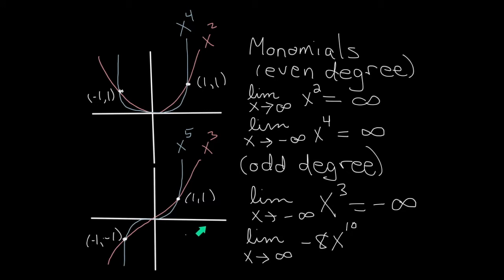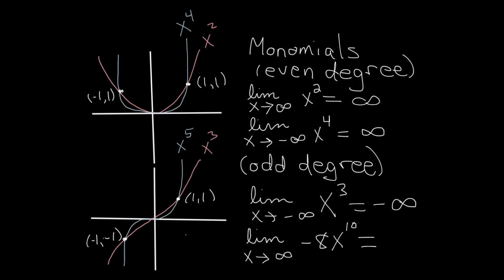Most limits rely on knowing the basics about graphing, but we don't have to graph everything. Consider the limit as x goes to infinity of negative 8x to the 10. Since 10 is an even power, x to the 10 goes to positive infinity, but that is multiplied by negative 8, so the final answer is negative infinity.